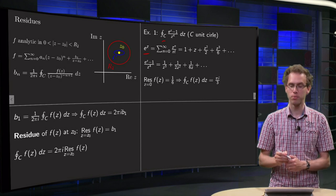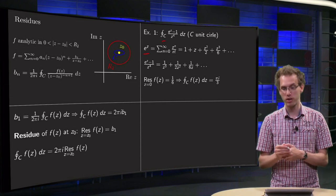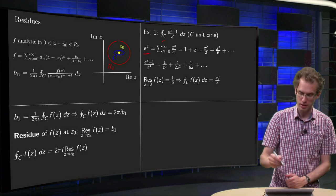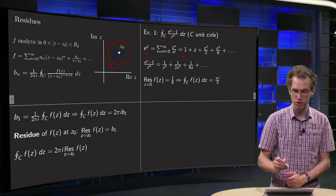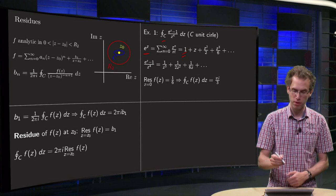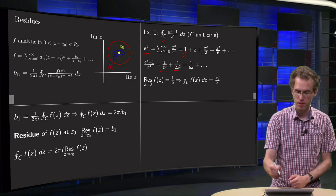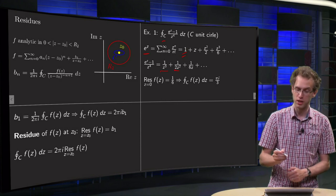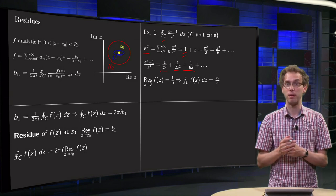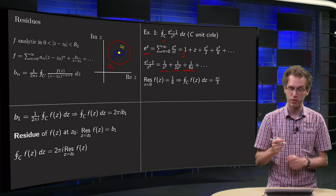Sum from m=0 to infinity z^m/m!, so 1 + z + z²/2 + z³/6, etc. So, e^z - 1, then this 1 over here cancels out, divided by z⁴, so you get z/z⁴ equals 1/z³, and then z²/2 divided by z⁴, and then z³/6 divided by z⁴, etc. But the only thing we need from this expansion is the b₁ term, so the coefficient of 1/z.